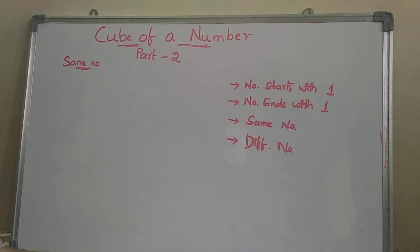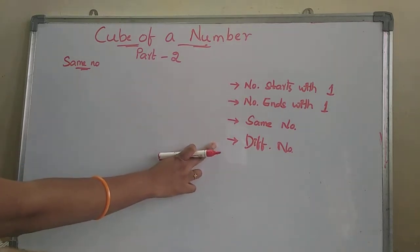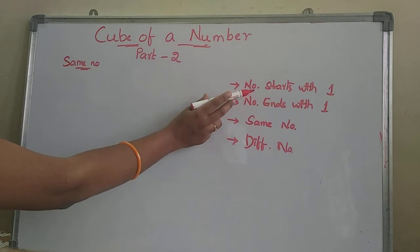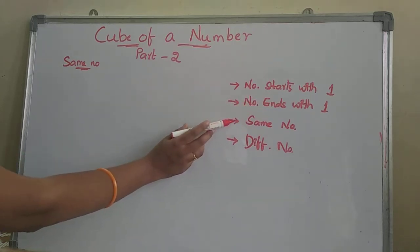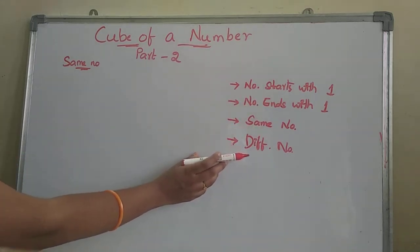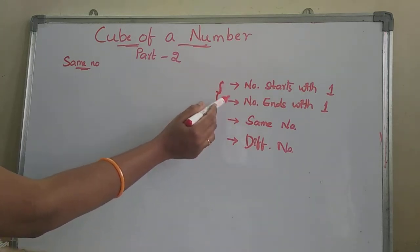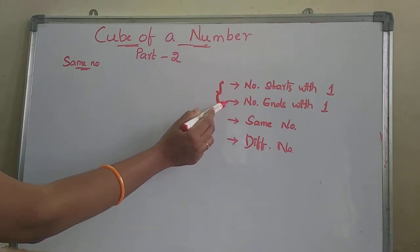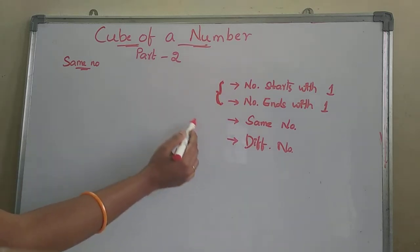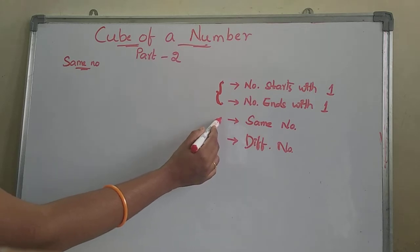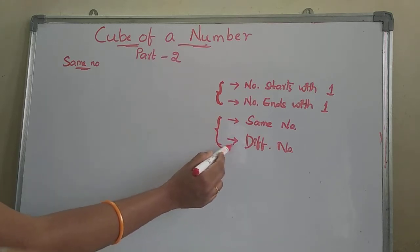Hello everyone, welcome back to session 10. In this video, we are going to learn a trick for finding the cube of a number. For finding a cube of a number, we have 4 types of problems. That is, number starts with 1, number ends with 1, same numbers, and different numbers. I have already done a video for the first 2 types — that is part 1. In this part 2 video, we are going to deal with same numbers and different numbers.